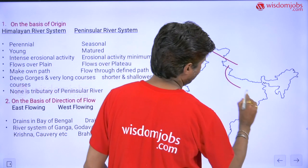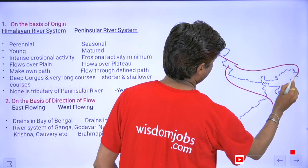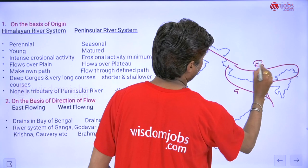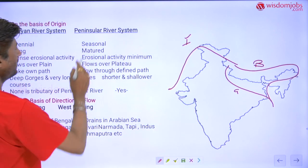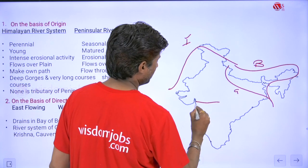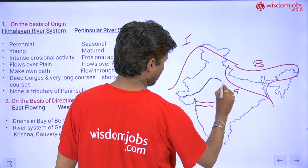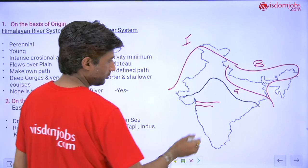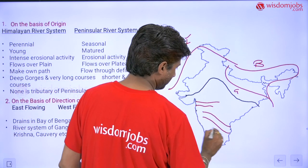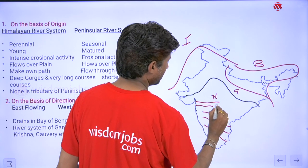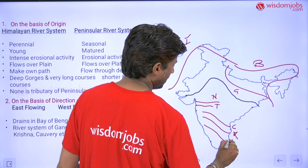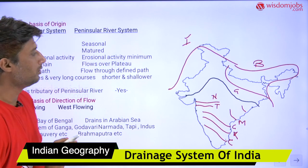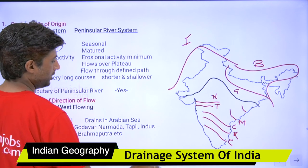The Himalayan river system includes the Indus, the Ganga, and the Brahmaputra river systems. The peninsular river system includes the rivers flowing over the peninsular part of India — that is, Narmada, Tapi, Godavari, Krishna, Kaveri, Mahanadi, Brahmani, and others — which we will cover in detail.